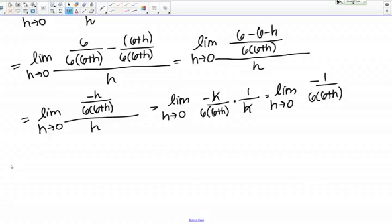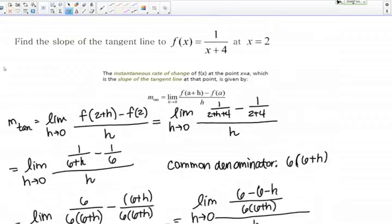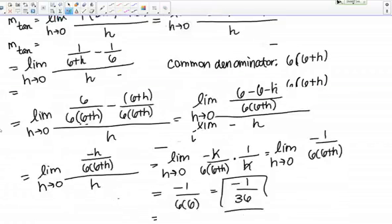Now I am at a form that is continuous at 0, which wasn't the case before. So now to finish out evaluating this limit, I just need to plug in 0. That's going to get me negative 1 over 6 times 6, or negative 1 over 36. And that's my final answer. Negative 1 over 36 is the slope of the tangent line to this function at x equals 2.